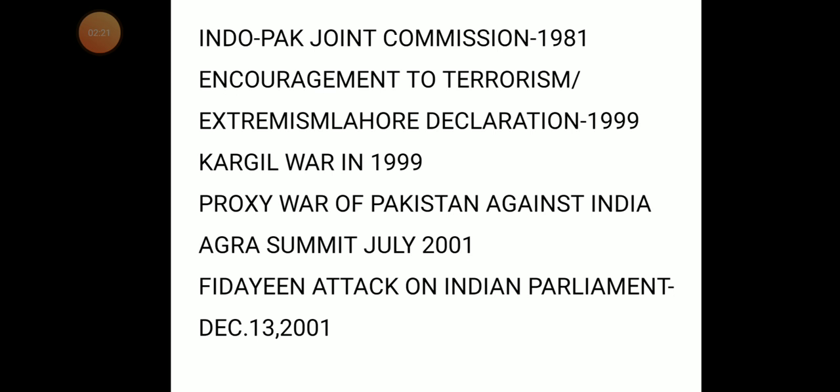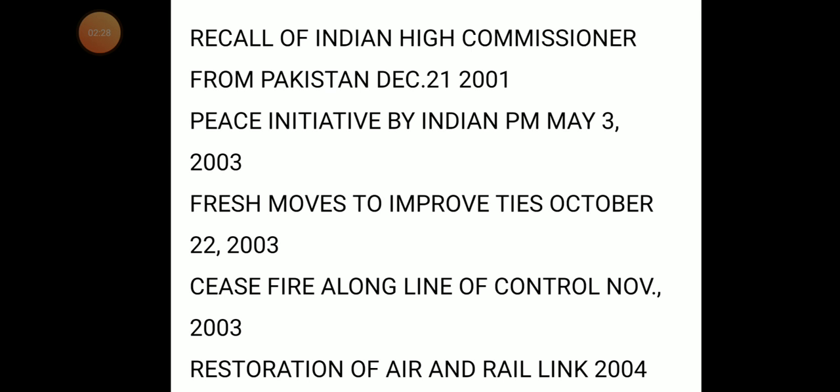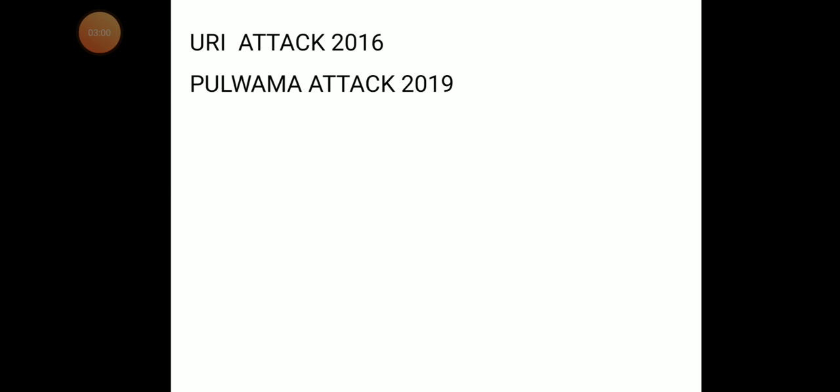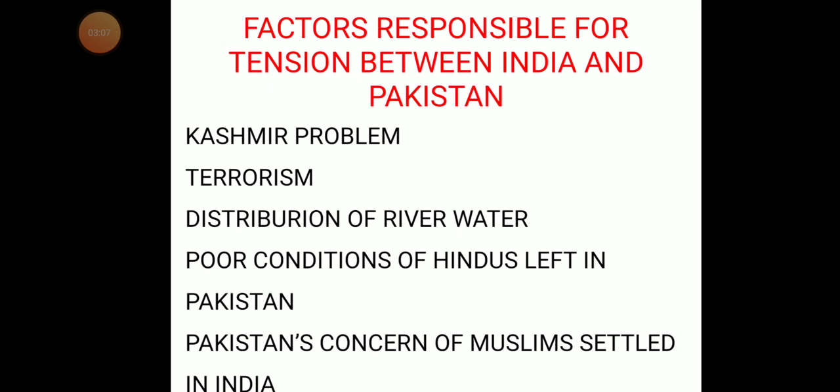Further events include the Agra Summit and the attack on the Indian Parliament, followed by India recalling its high commissioner. Then came peace initiatives and fresh moves to improve relations, a ceasefire along the Line of Control, restoration of air and rail links, mutual dialogue to resolve Kashmir, a joint mechanism to combat terrorism, the terrorist attack on Mumbai, the opening of the Kartarpur Corridor, the Uri attack, and the Pulwama attack.